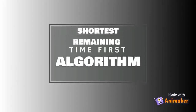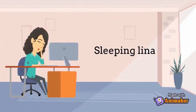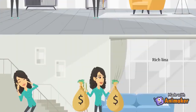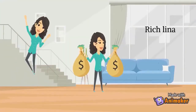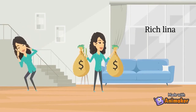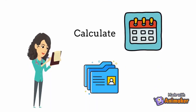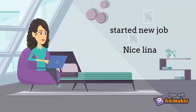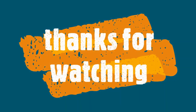Next, we will talk about Shortest Remaining Time First. Lina was sleeping because she was exhausted, but she was woken up by a call. It turned out to be a job offer from her client that pays a lot with minimal effort, so Lina became happy. She calculated the time the new job would take compared to the old one she was currently doing. Lina found out the new job takes two weeks to one month and it wouldn't affect her other jobs. So Lina stopped the work she had been doing, started the new one, and left the old one for later. Thank you.